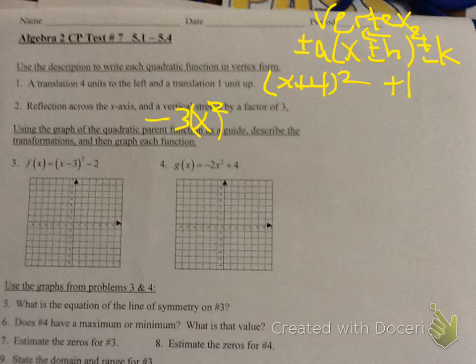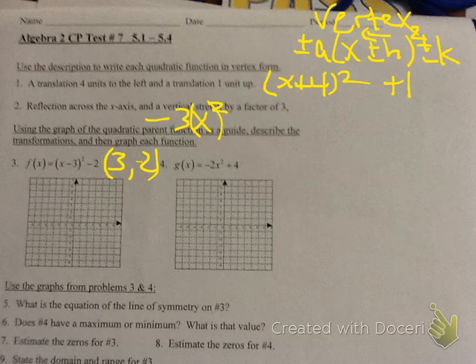Vertex form on numbers 3 and 4. The vertex of number 3 is 3, negative 2. Take the opposite of whatever's in parentheses; the one outside the parentheses, keep it the same — that's your vertex. Number 4: there are no parentheses, so there's no H. Put zero for the x-coordinate, because there was no H. So this negative 2 represents a vertical stretch — nothing to do with the vertex. The vertex is (0, 4).